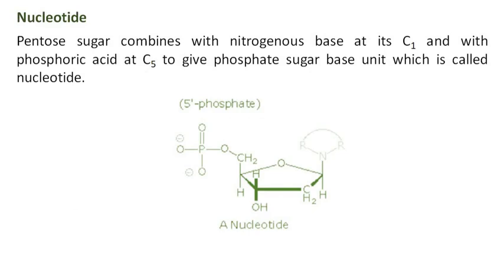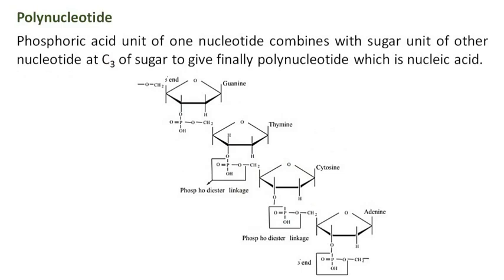Nucleotide: Pentose sugar combines with nitrogenous base at its C1 and with phosphoric acid at C5 to give a phosphate-sugar-base unit which is called a nucleotide. Polynucleotide: Phosphoric acid unit of one nucleotide combines with sugar unit of another nucleotide at C3 of sugar to give finally a polynucleotide, which is nucleic acid.